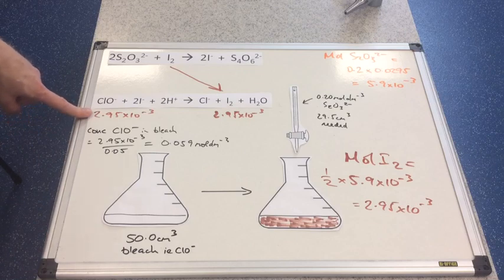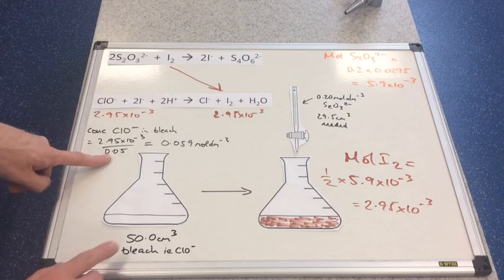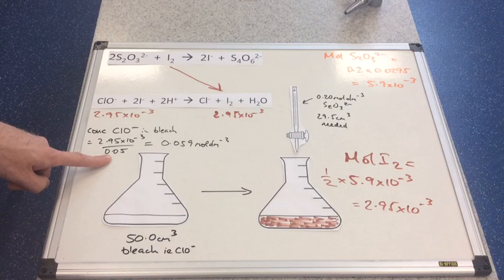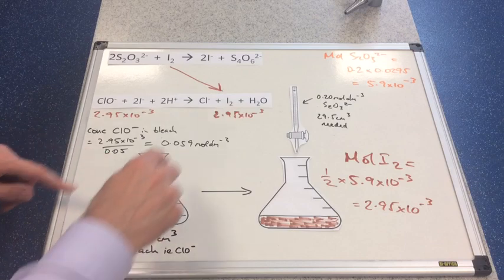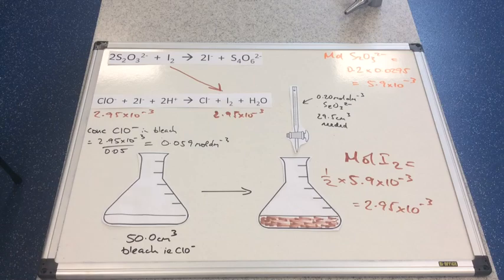Finally, the concentration of the chlorate(I) ion, ClO⁻, in the bleach is moles divided by volume. We have 50 cm³ of bleach, which is 0.05 dm³. That comes out at 0.059 mol dm⁻³. So we've well and truly covered all bases with thiosulfate titrations.